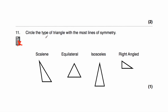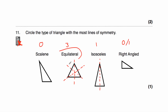Question number 11 says: circle the triangle with the most lines of symmetry. We've got a scalene triangle, equilateral, isosceles and right-angled. A scalene triangle has 0 lines of symmetry. An equilateral triangle has 3 lines of symmetry — a vertical one, one going through the middle of each side. An isosceles triangle has 1 line of symmetry. A right-angled triangle has 0, or possibly 1 if it's also isosceles with two 45-degree angles. The answer is equilateral.